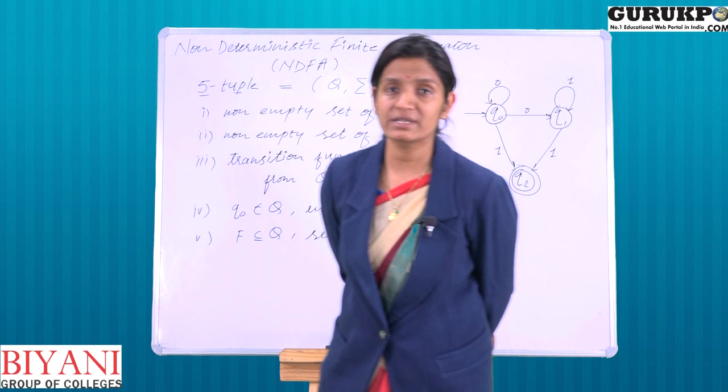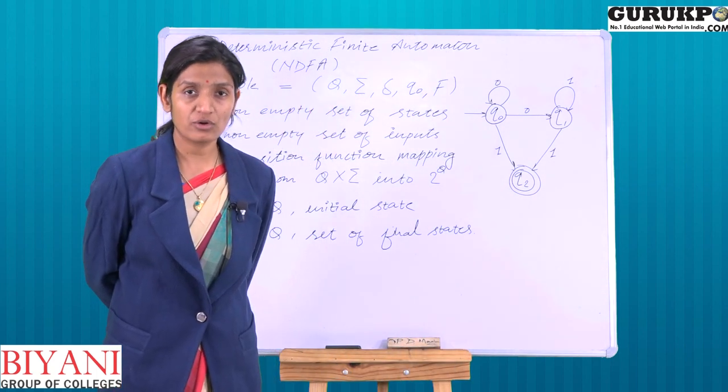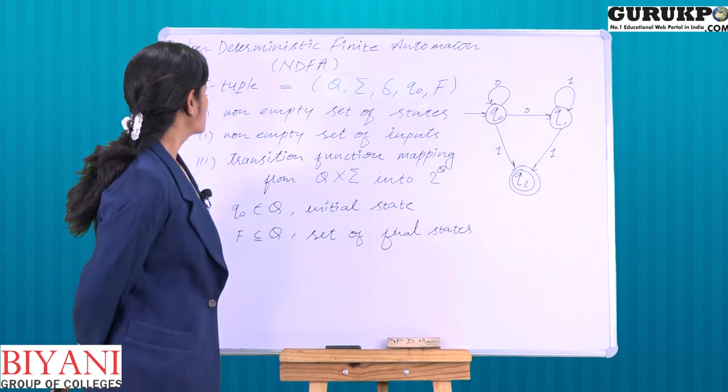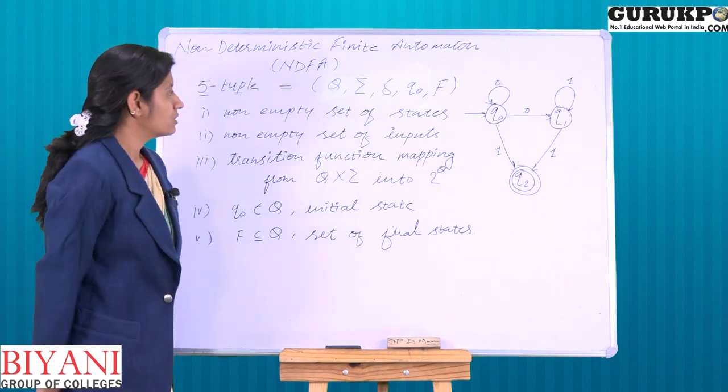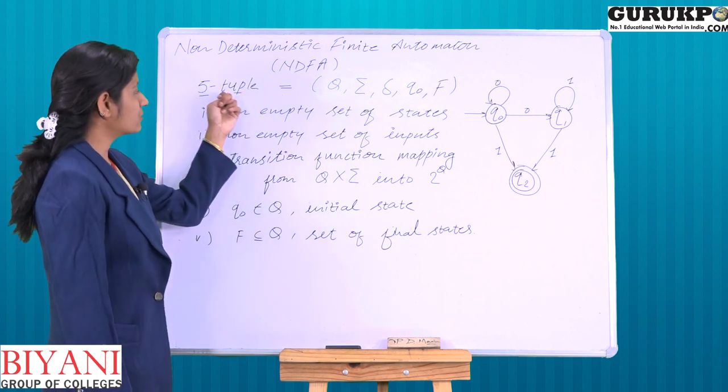DFA, we have read it first, Deterministic Finite Automata. So first, how do we define a Non-Deterministic Finite Automata? Similarly, as we define a DFA, we define it using 5-tuple: Capital Q, Summation, Delta, Q0 and F.